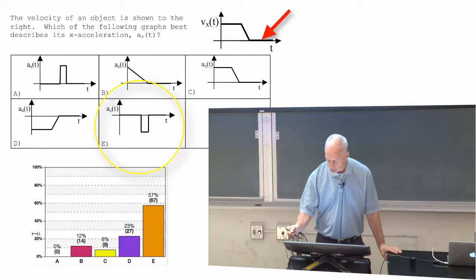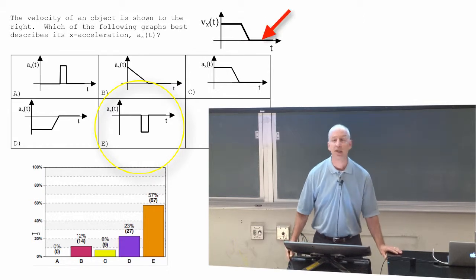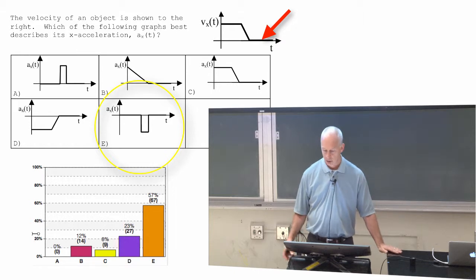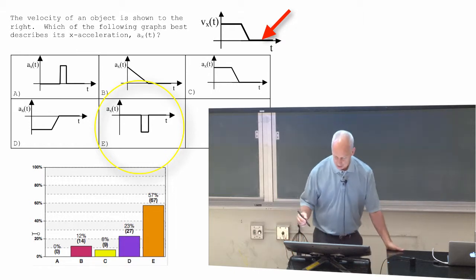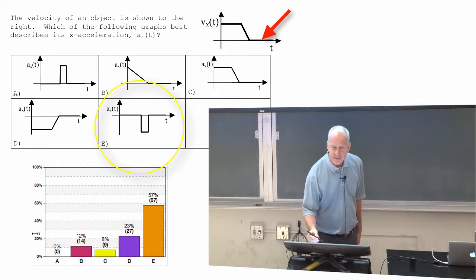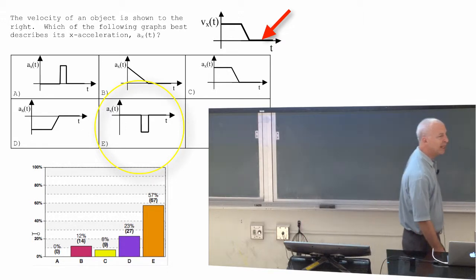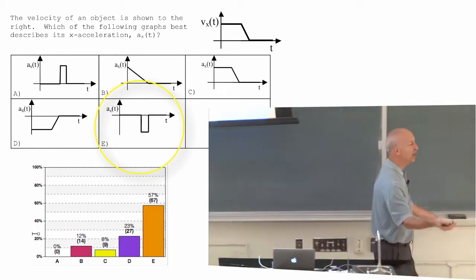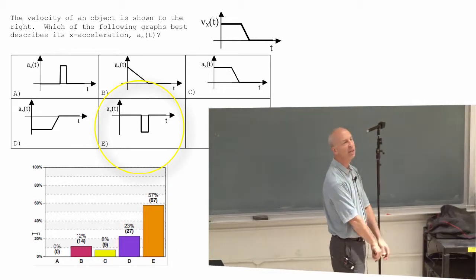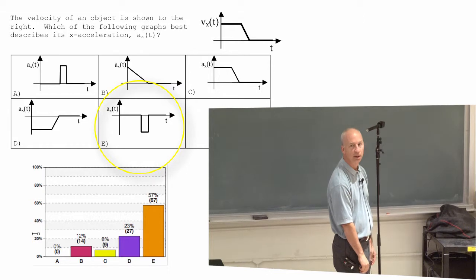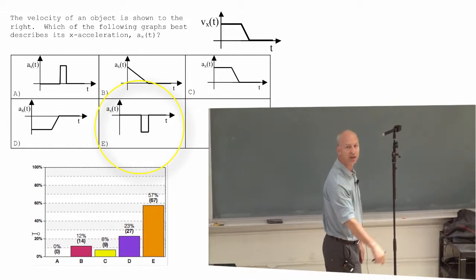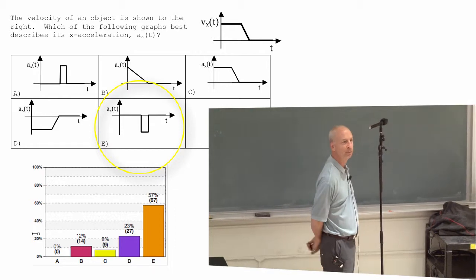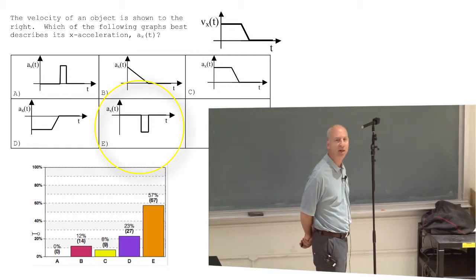And after the slowing down part, you're stopped, so the acceleration is zero again. Going back to Newton's second law: the net force on me at the beginning, while my acceleration is zero and my velocity is constant, the net force on me is zero. In order to slow down, I needed a net force in the other direction, and then I stop. Then my net force is zero again, because my velocity stops changing.